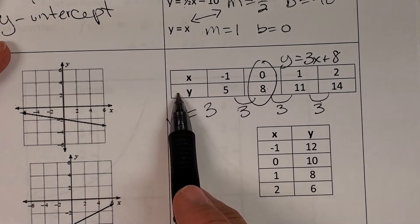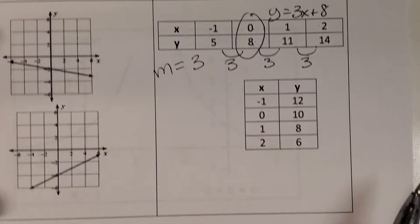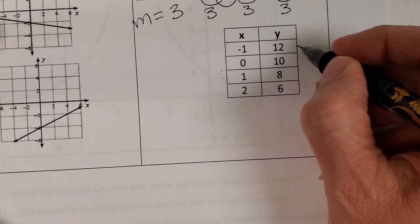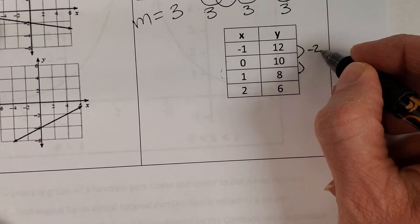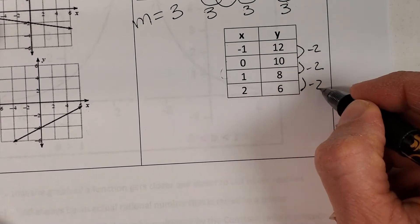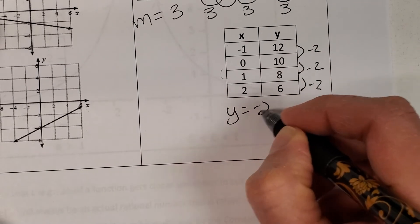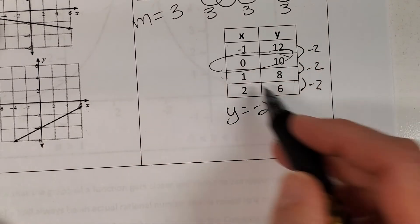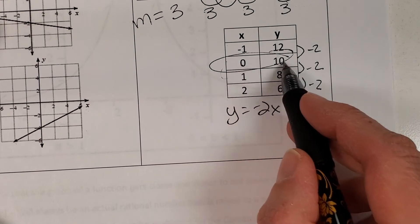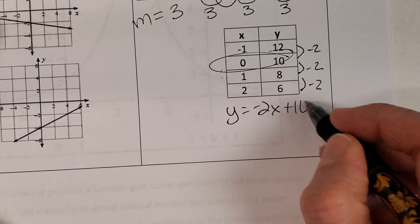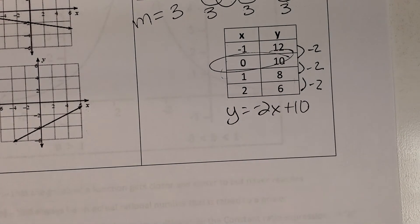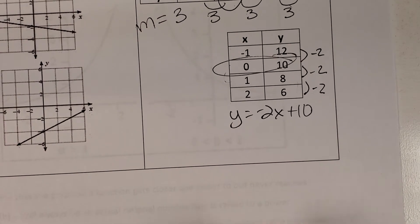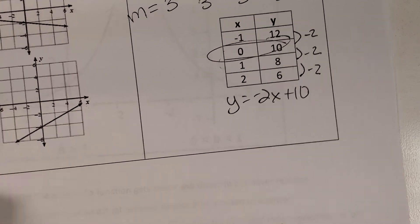Sometimes tables are written horizontally and sometimes vertically. In this vertically-written table, x goes up by 1 each time, but the y-values are subtracting 2 each time, meaning our slope is negative 2 — a decay or decreasing model. When x is 0, our y-intercept is 10. That gives us context as we switch to learning a new function: the exponential function.